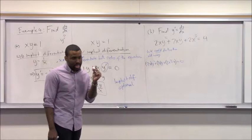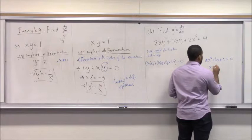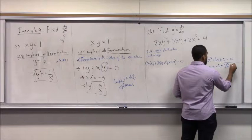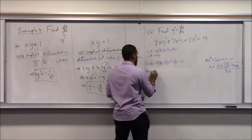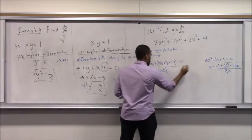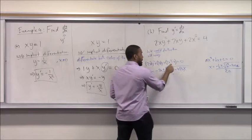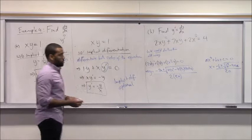The quadratic formula says: if you have ax squared plus bx plus c equals zero, you can solve for x by taking negative b plus or minus the square root of b squared minus 4ac, all over 2a. Applying that rule here, you could actually solve for y and get an expression using the quadratic formula.